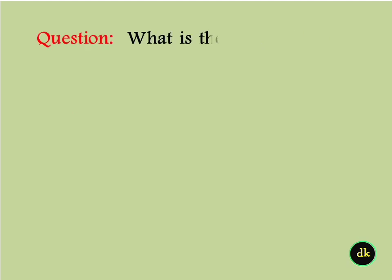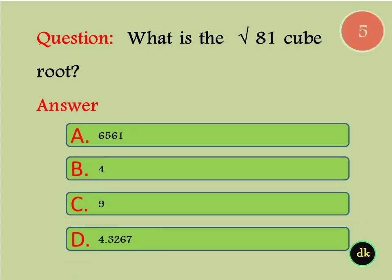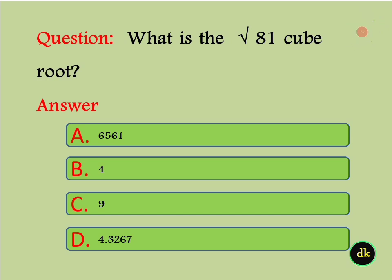What is the cube root of 81? The answer is 4.3267.